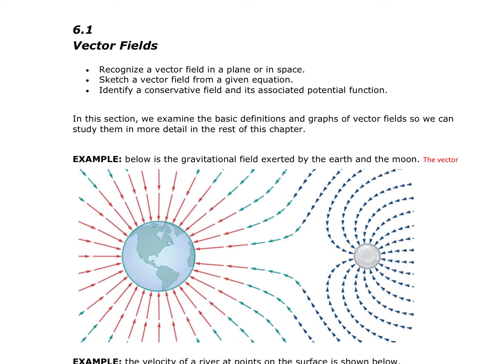Vector fields are important because they describe many physical concepts such as gravitation and electromagnetism, which affect the behavior of objects over a large region of a plane or space. They're also useful when dealing with large-scale behavior such as atmospheric storms and deep sea ocean currents.